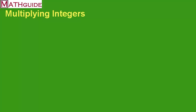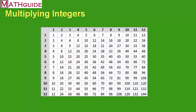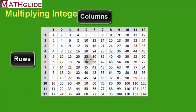Our first section, we're going to talk about how to multiply positive numbers, and specifically we're going to talk about a multiplication table. This is a multiplication table, and when you use a multiplication table, you should take a row times a column and match them up.